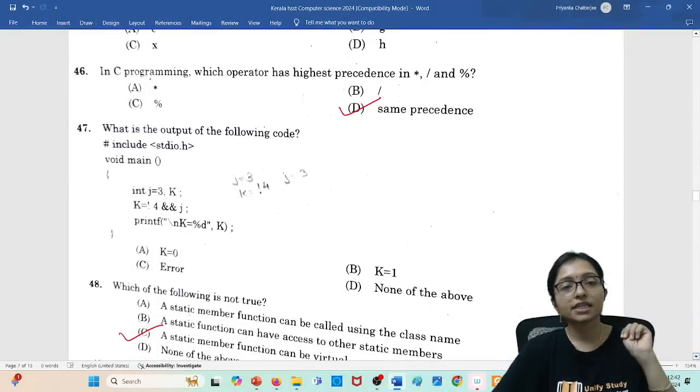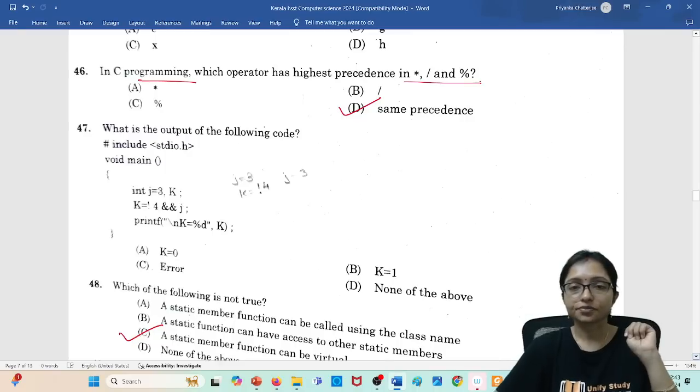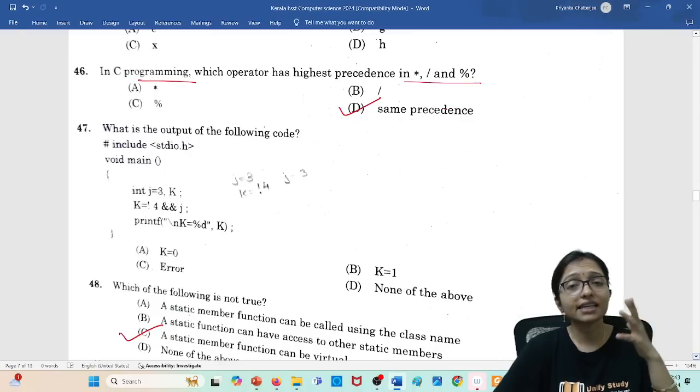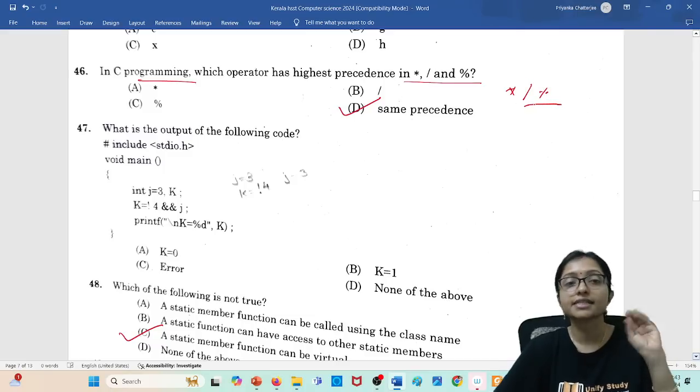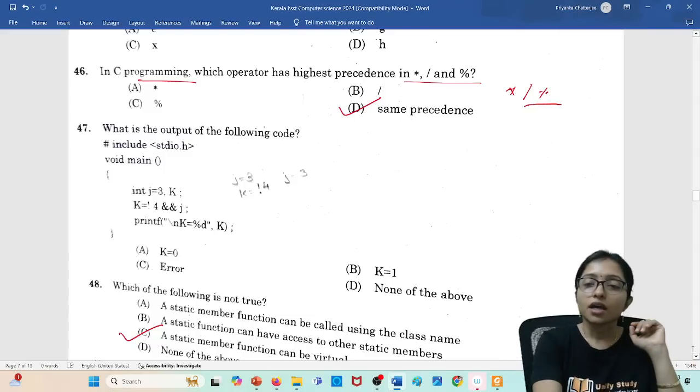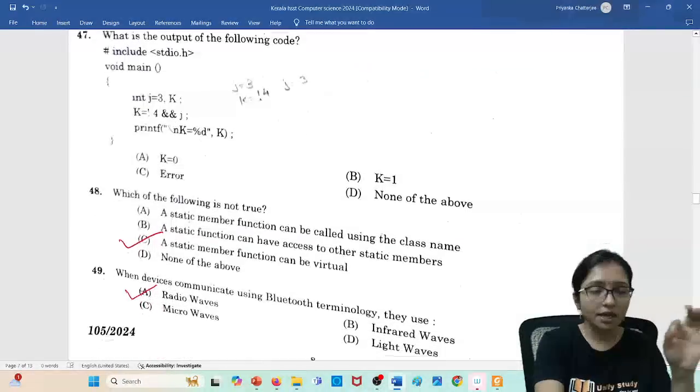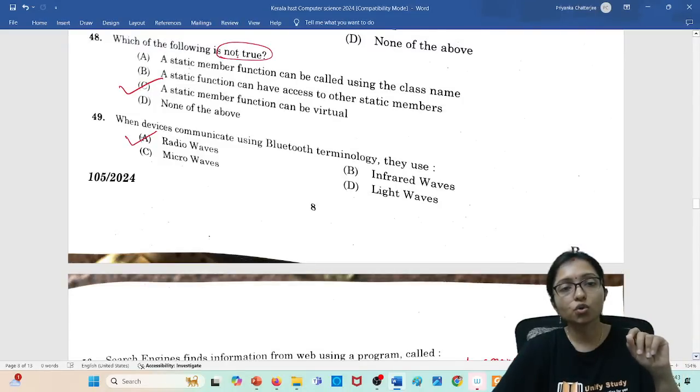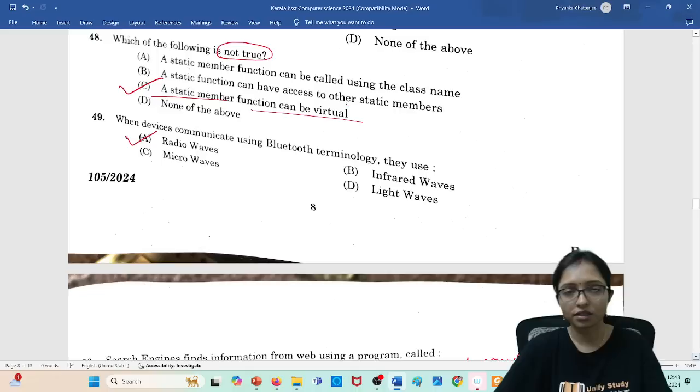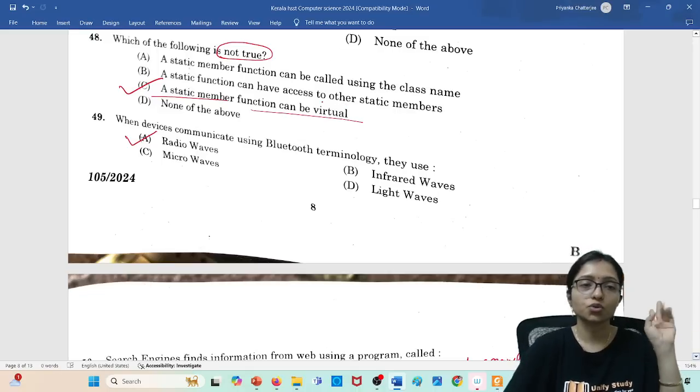These questions I will solve later. I am solving this one: C programming, these all precedence are same actually. Multiplication, division, and percentage, these all precedence are the same precedence. Now programming questions I will solve in the next class. Which of the following is not true? A static member cannot be virtual, it's not possible, so it is not true.